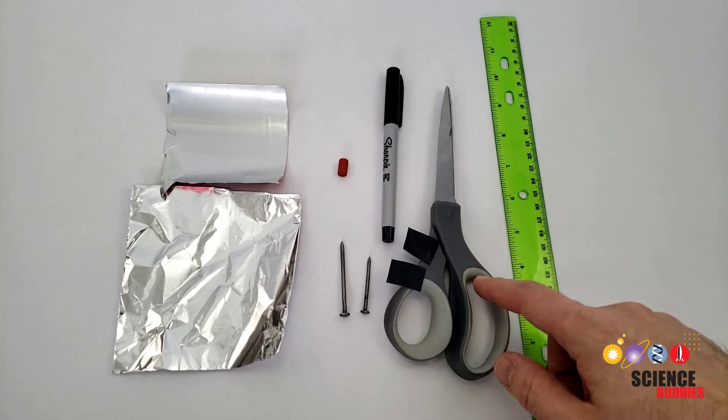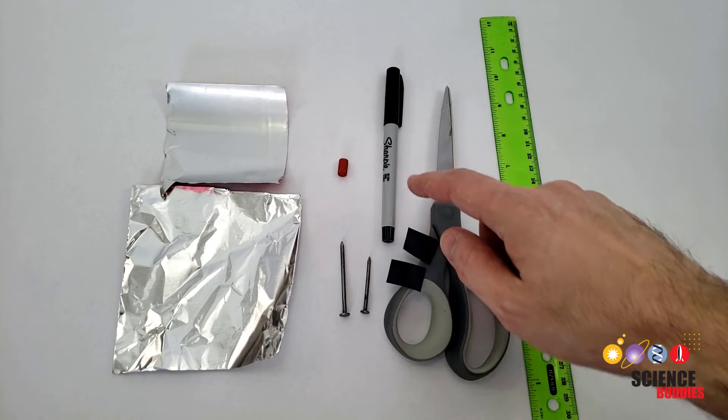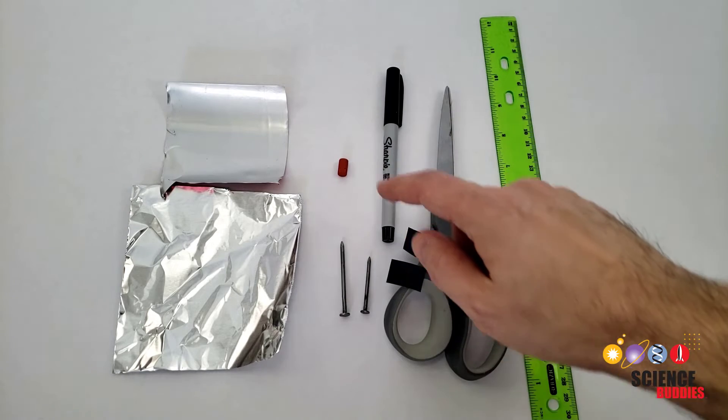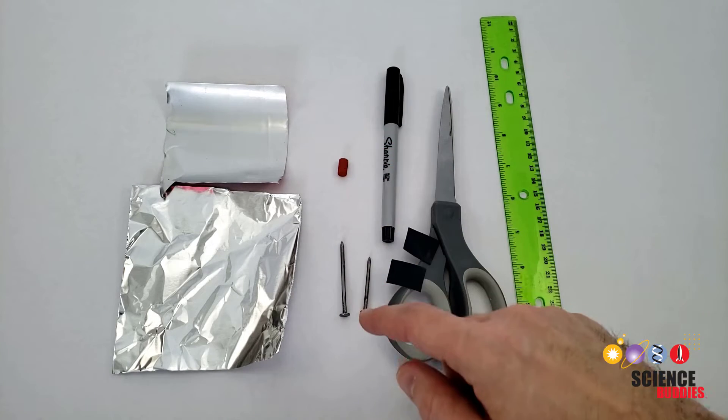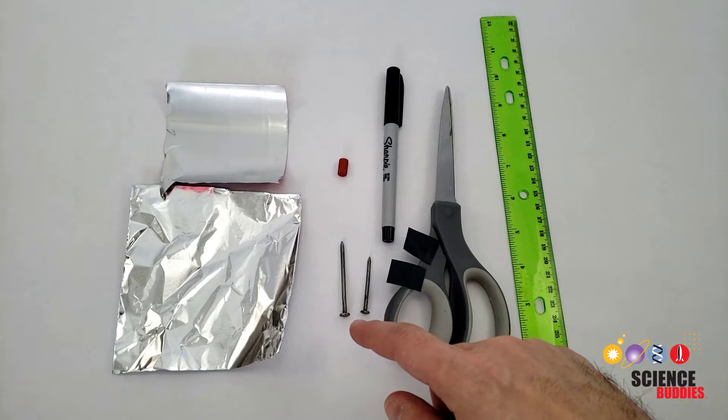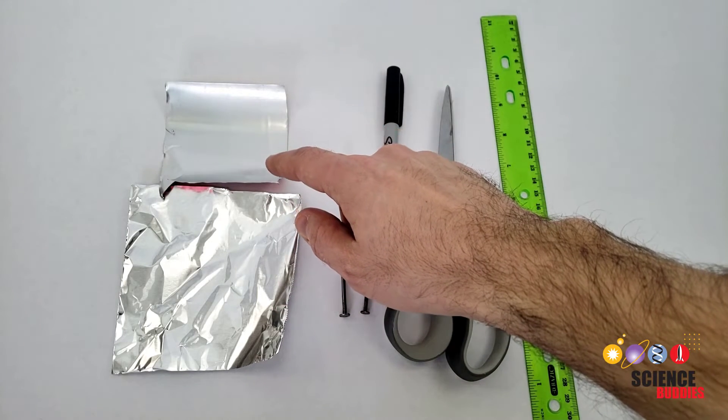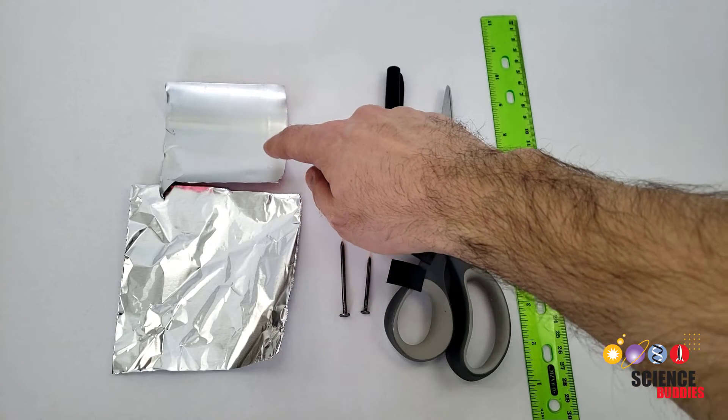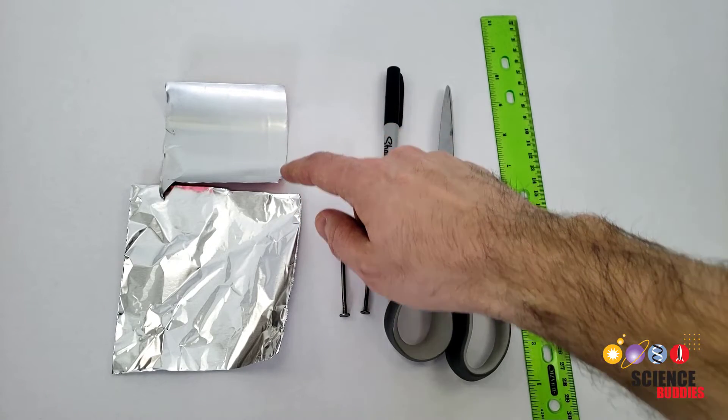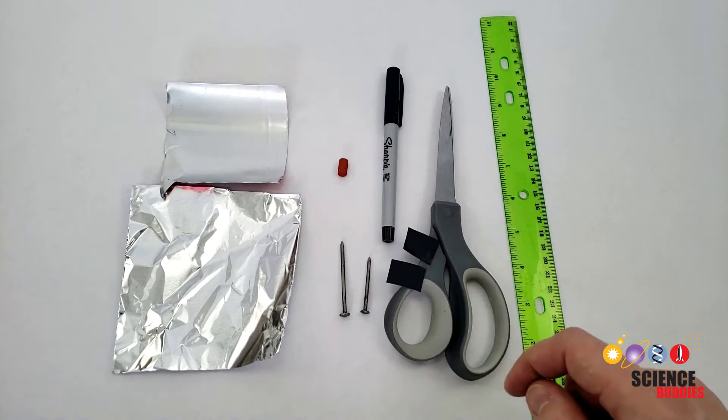A ruler, scissors, fine tip marker, electrical tape, pencil eraser, two nails, one slightly larger than the other, and a piece of either aluminum foil or foil cut from an aluminum can. The foil from the can will work better because it's more rigid, but the aluminum foil is easier to cut.